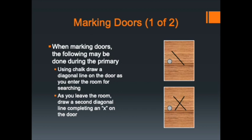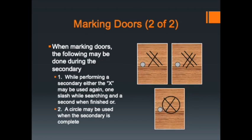For marking doors, if you can mark in the soot on the doorway: one slash means you're starting the primary search, an X indicates the primary search is complete. For the secondary search, add another slash mark on top of the X. Two X's or a circle around the X indicates both primary and secondary searches have been completed for that room.